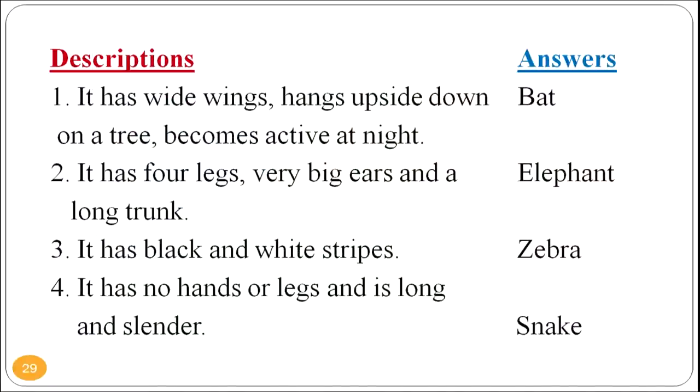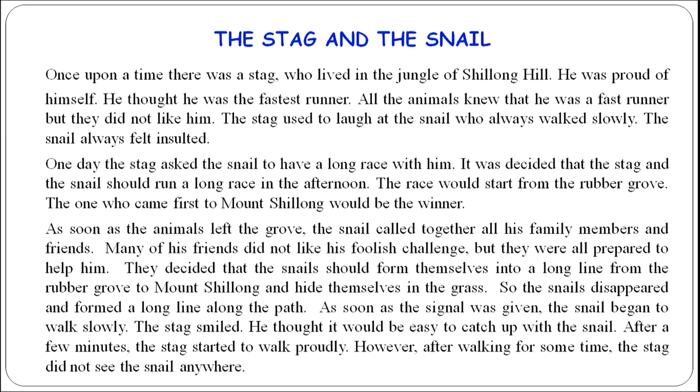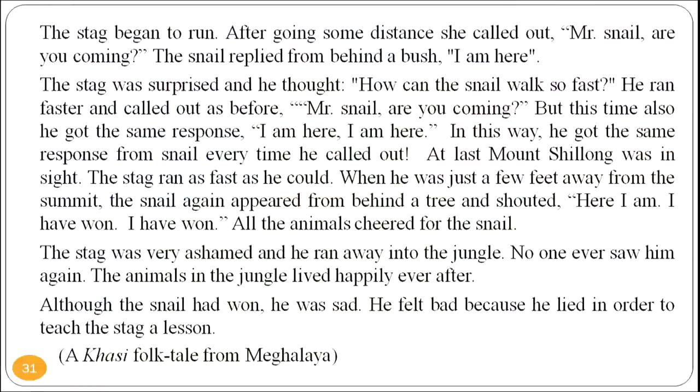Describe animals orally and ask students to point to the correct picture. Sample descriptions: 'It has wide wings, hangs upside down on a tree, becomes active at night' — answer: bat. 'It has four legs, very big ears, and a long trunk' — elephant. 'It has black and white stripes' — zebra. 'It has no hands or legs and is long and slender' — snake. The story I have used for these activities is 'The Stag and the Snail', a folk tale taken from the Khasi language spoken in Meghalaya.